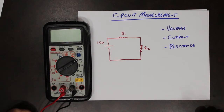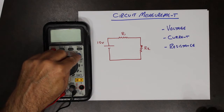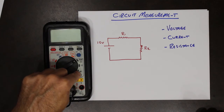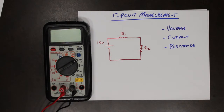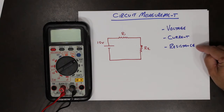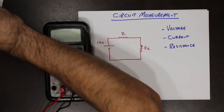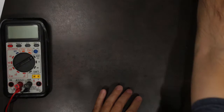This particular meter has a few other functions as well — it'll measure temperature, things known as the beta or gain of transistors, and it'll measure something called a diode. As you progress through your study, you'll learn how to use all of those tools. But right now, we're going to stick with the three basics: voltage, current, and resistance. Let's do the simplest one, which is voltage.